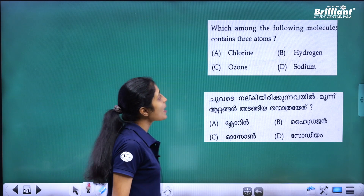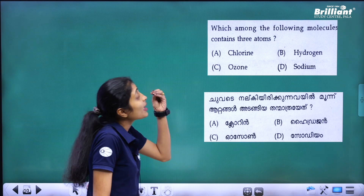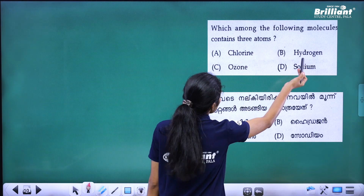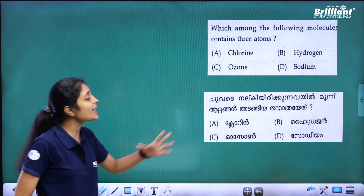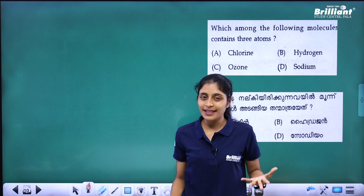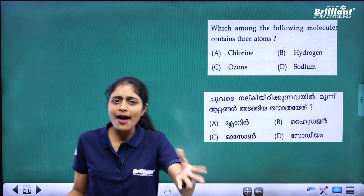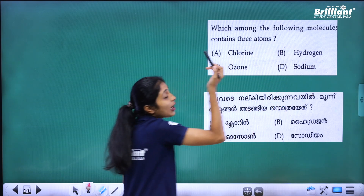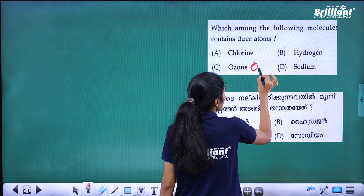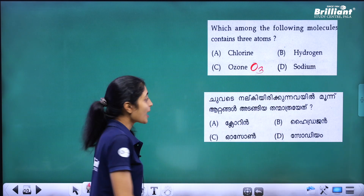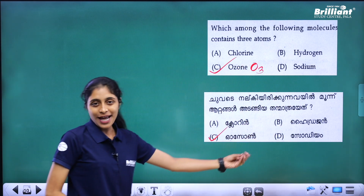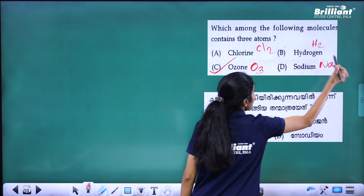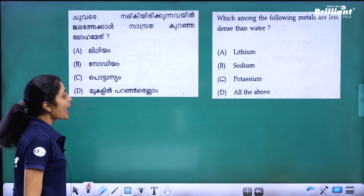Next question: which among the following molecules contains 3 atoms? The options are chlorine (Cl₂), hydrogen (H₂), ozone (O₃), and sodium. Ozone is O₃, which contains 3 atoms. So option C — ozone — is the answer.